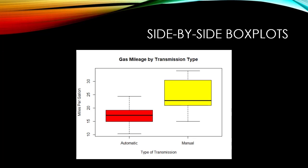In these box plots, we do see a relationship because there are different gas mileages for different transmission types. The distribution of gas mileage is higher on the gas mileage scale for manual transmissions than for automatic transmissions.